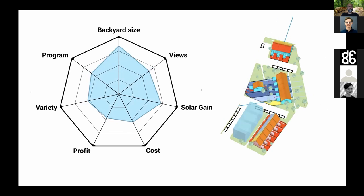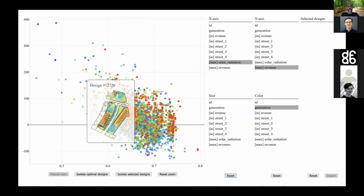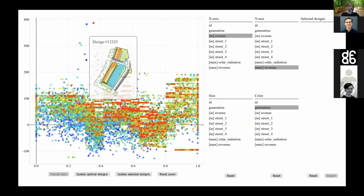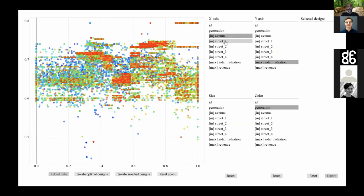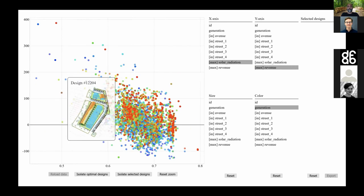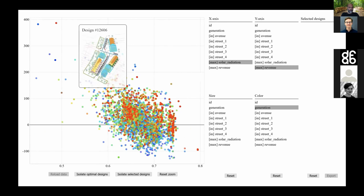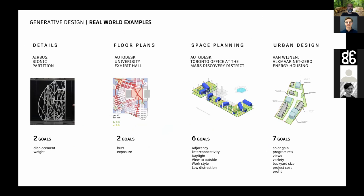The algorithm generated many different solutions. We provided an early version of the exploration interface — since built into Autodesk Revit — allowing us to map metrics on x and y axes and also encode size and color, essentially mapping a four-dimensional space into 2D. If we had VR there'd be a fifth dimension. We pulled out interesting designs, mainly looking at profit versus solar gain, identified the Pareto frontier, and one design was further developed for the project.